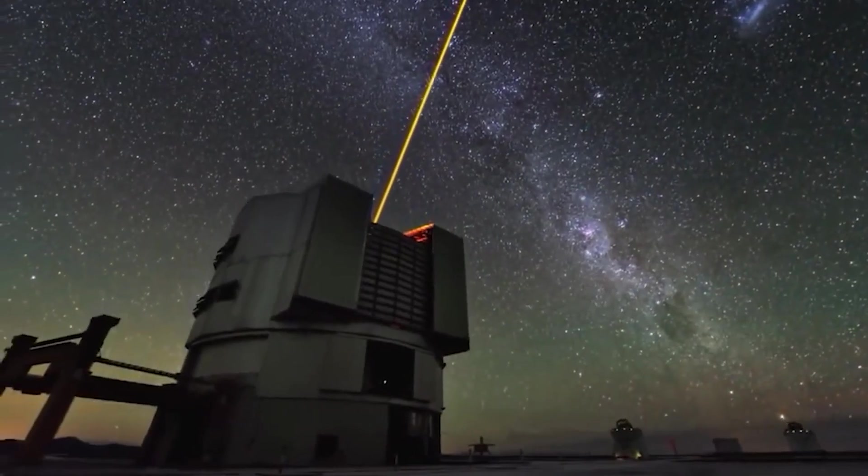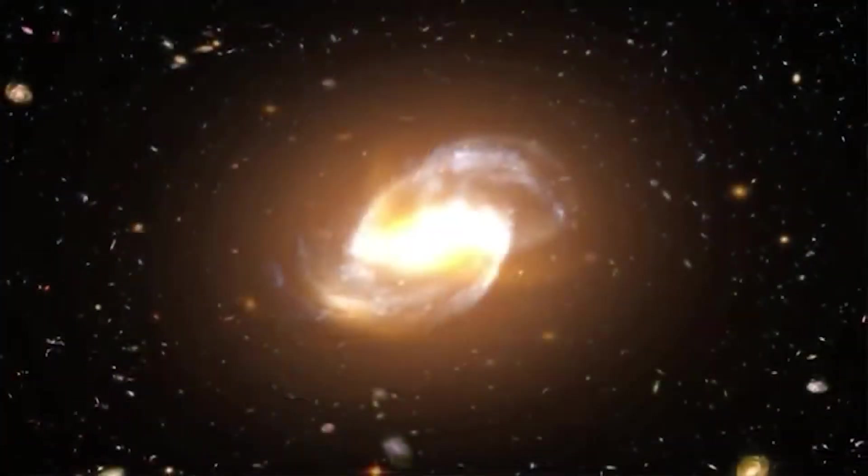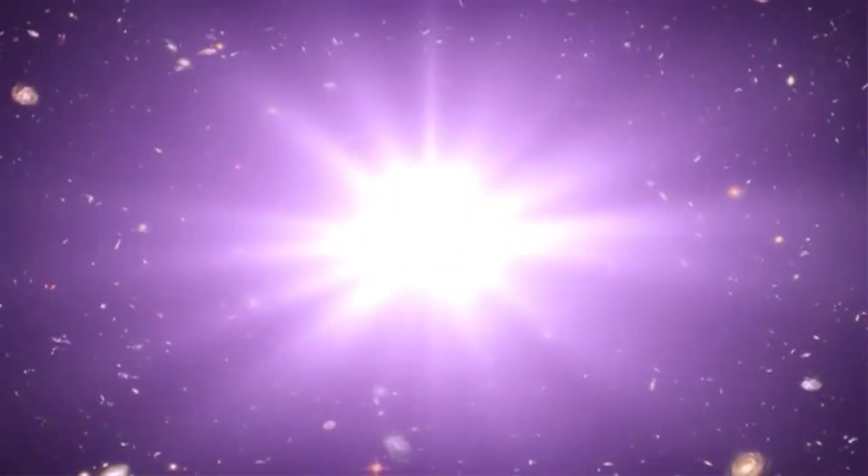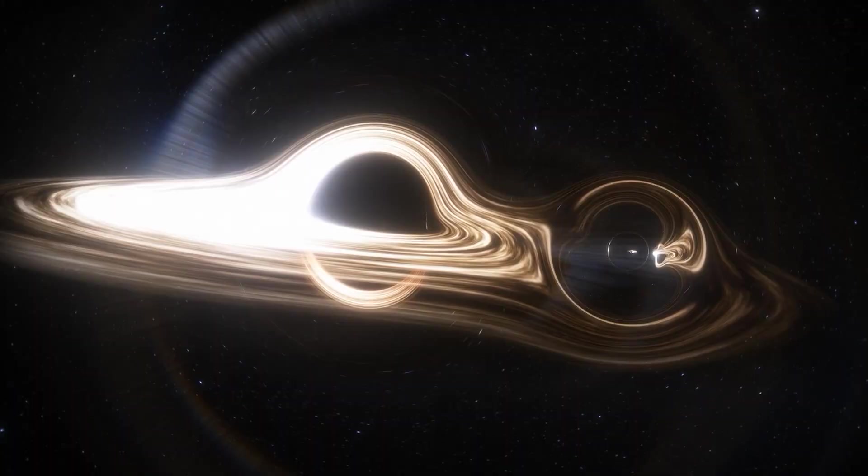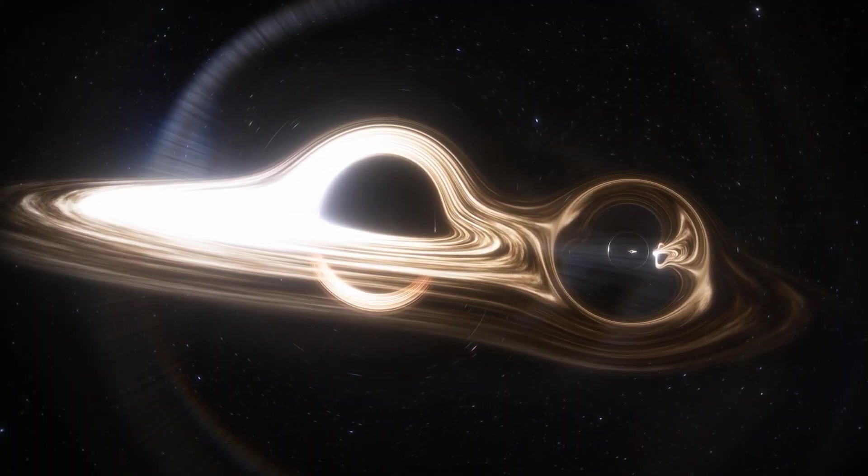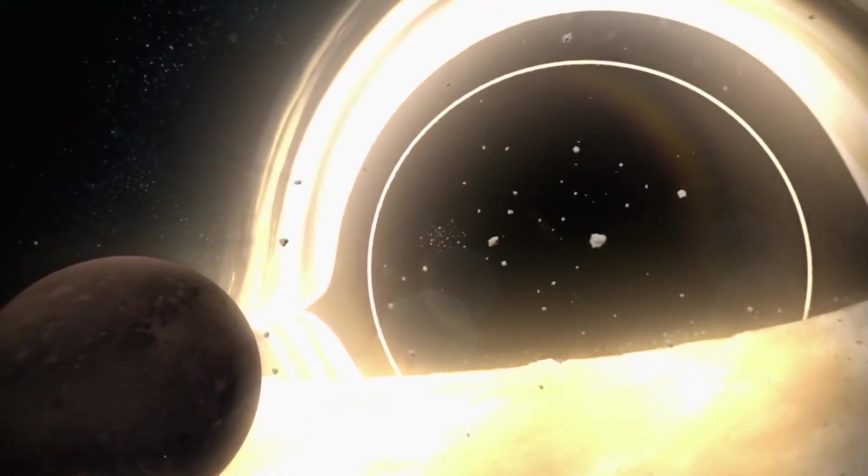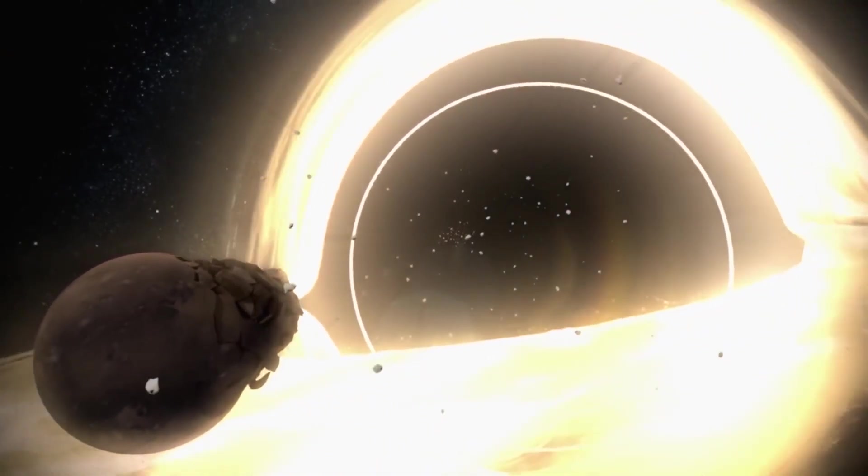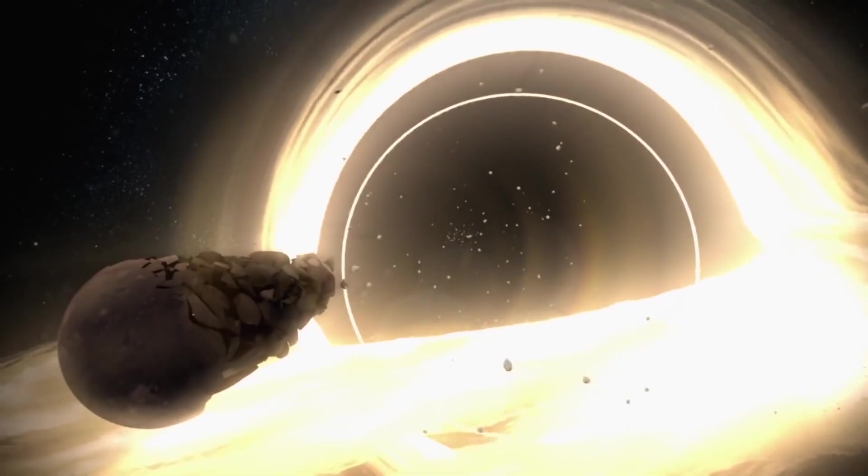Black holes form when massive stars collapse at the end of their lives, using up their fuel from nuclear fusion. This causes core collapse and extreme curvature of spacetime at the central singularity, which has not yet been fully understood by physicists. At the outer edge of this curvature is the black hole's event horizon, where nothing can escape, including light.